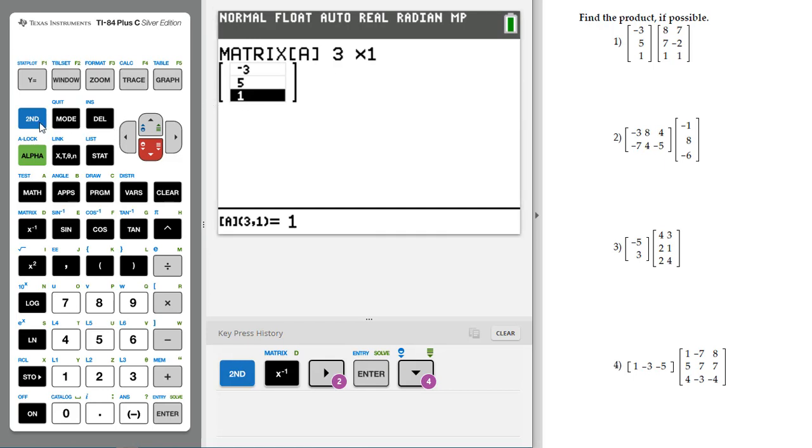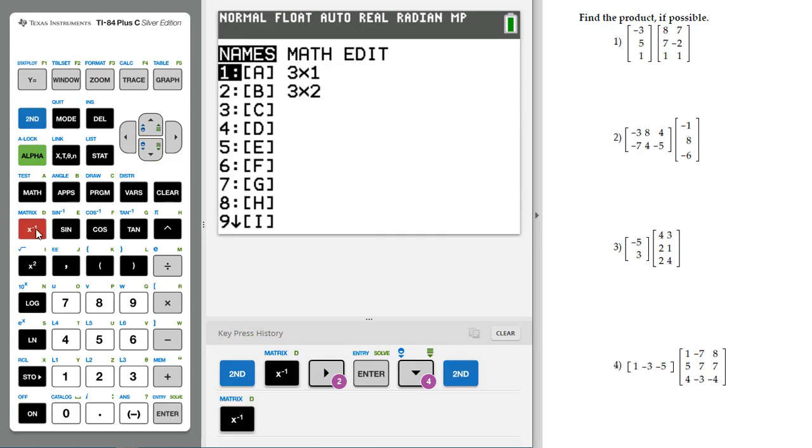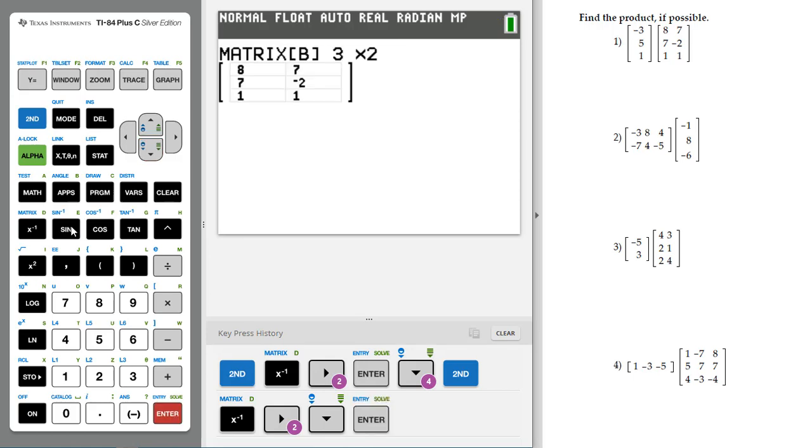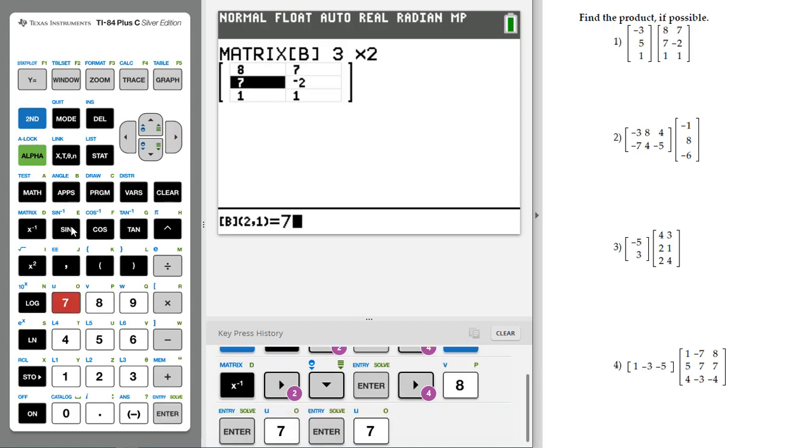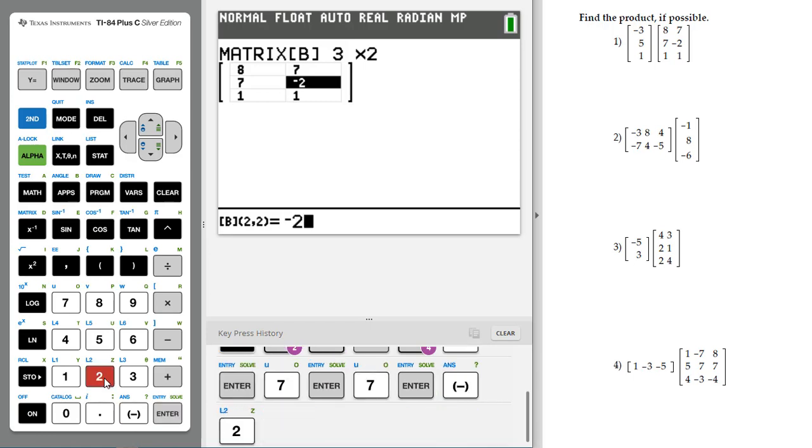Then to do the next one, you just go back to 2nd Matrix, and you would put the data under Edit. You would go to the 2nd Matrix, B, and you would edit that. So we put in a matrix that's a 3 by 2. And then you have 3 rows and you type in 8, 7, 7, negative 2. Remember to use the negative sign, not the minus sign. 1 and 1. And so we have those defined.